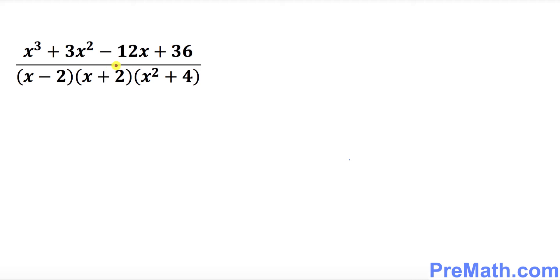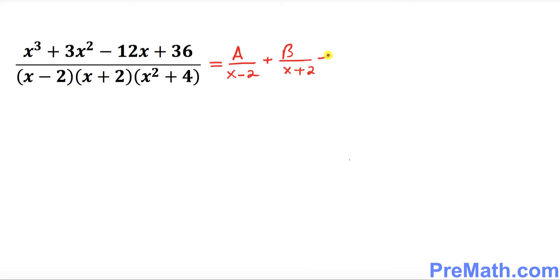Our rational expression can now be rewritten with this factored denominator. Let's set it up for partial fractions. We have two linear factors and one quadratic factor. For linear factors we write A over x minus 2 plus B over x plus 2, and for the quadratic factor we write Cx plus D divided by x squared plus 4.